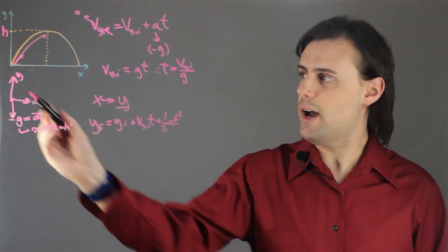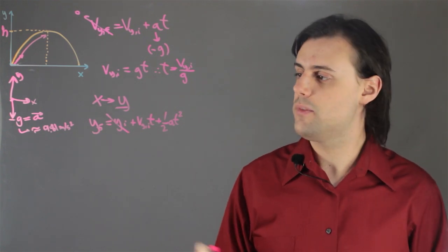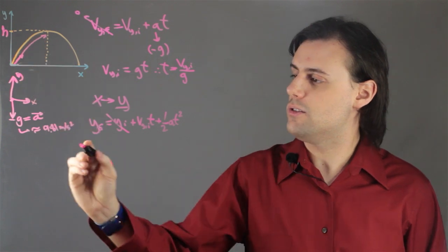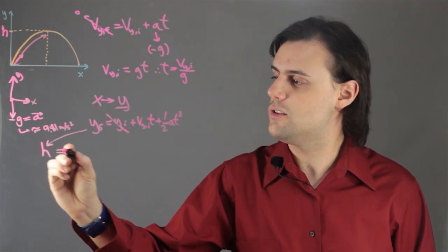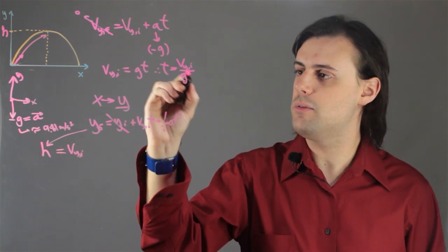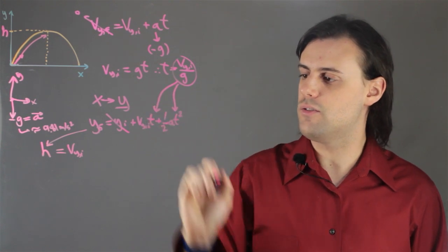My initial height, of course, is zero, because I'm doing everything relative to the origin. My final y value is my height. So I can rewrite this as h is equal to v_y i. And then for time, I can substitute this expression in each of these values for t.